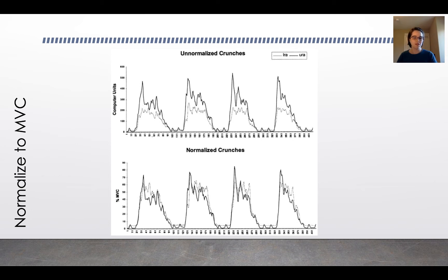Now normalizing to MVC might give you the impression that you'll never get a signal greater than 100 percent and that's not actually true. Sometimes in the course of an activity your subject will actually exert more than they did in their maximum voluntary contraction, and so that's something to be aware of. It's not necessarily a problem, just something to notice and know that it's not necessarily a spurious effect when you see that.